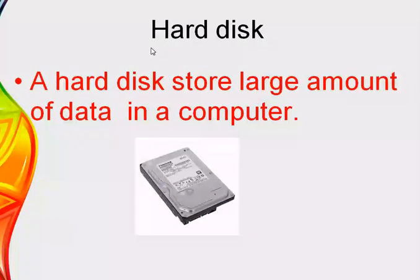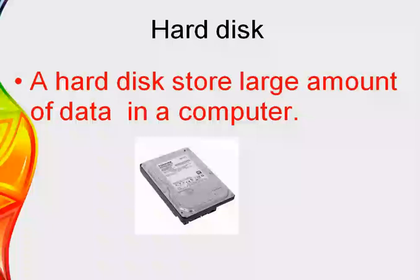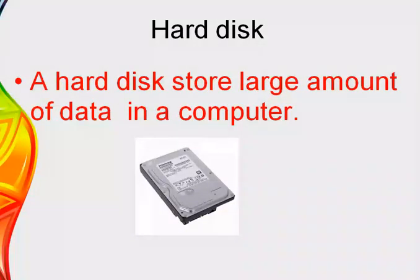The next device is hard disk — H-A-R-D-D-I-S-K. A hard disk is used to store a large amount of data or information in a computer. Whatever you save in a computer, that information is automatically stored in the computer's hard disk. Our hard disk is a small box placed inside the CPU cabinet.